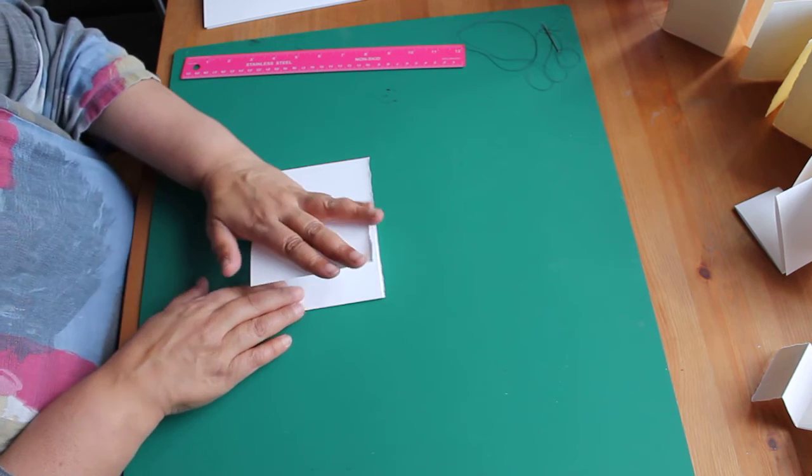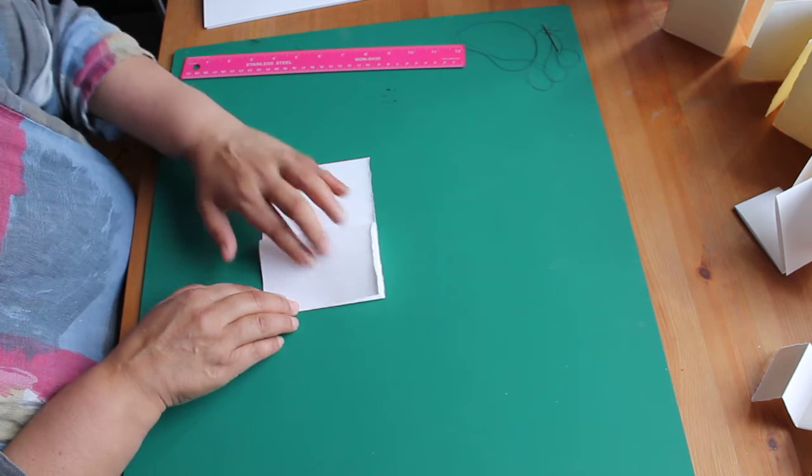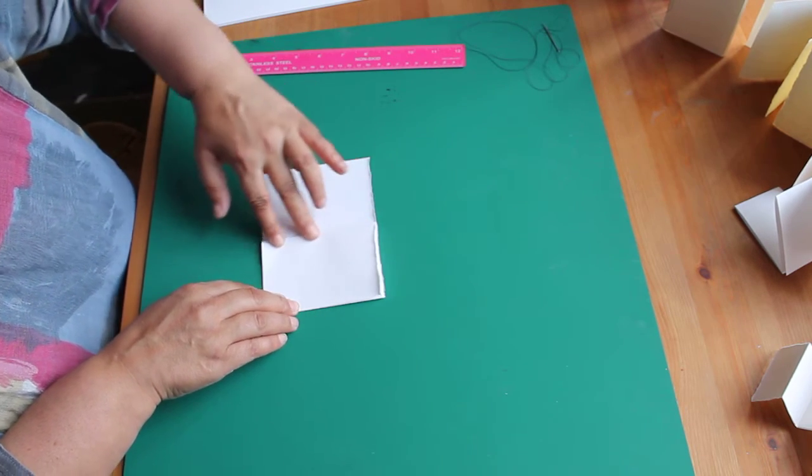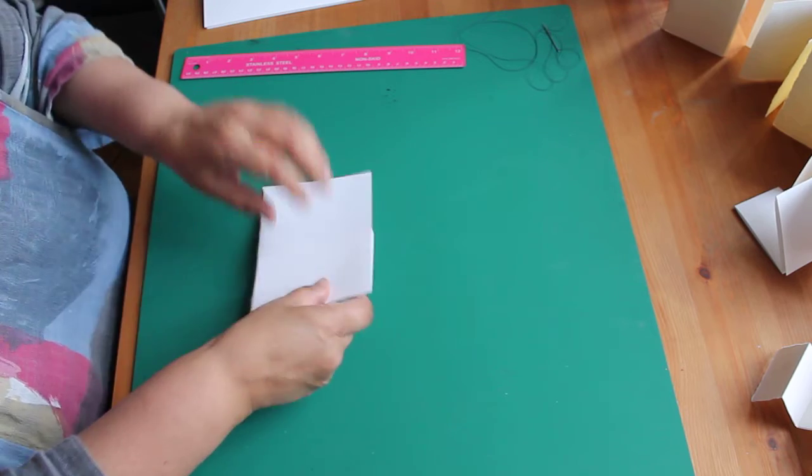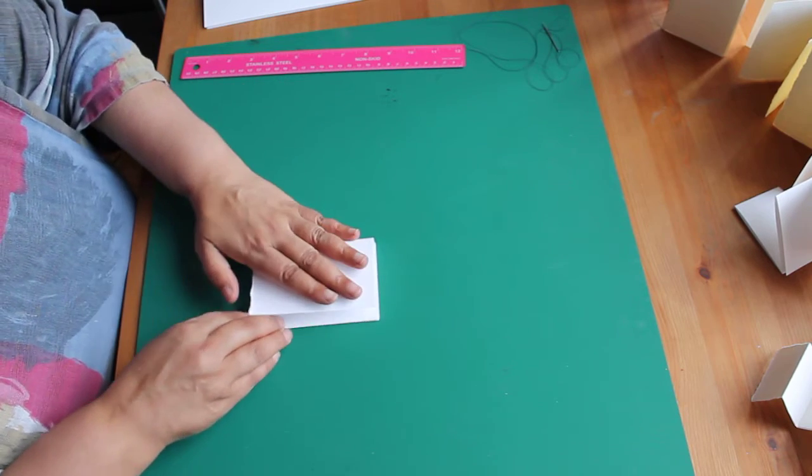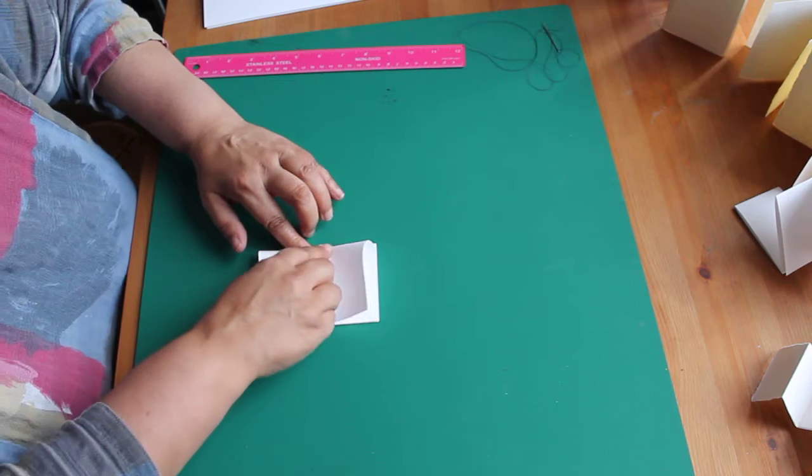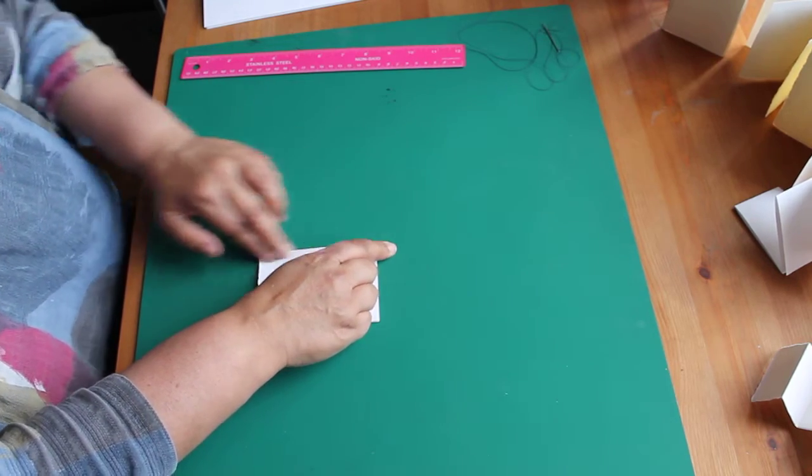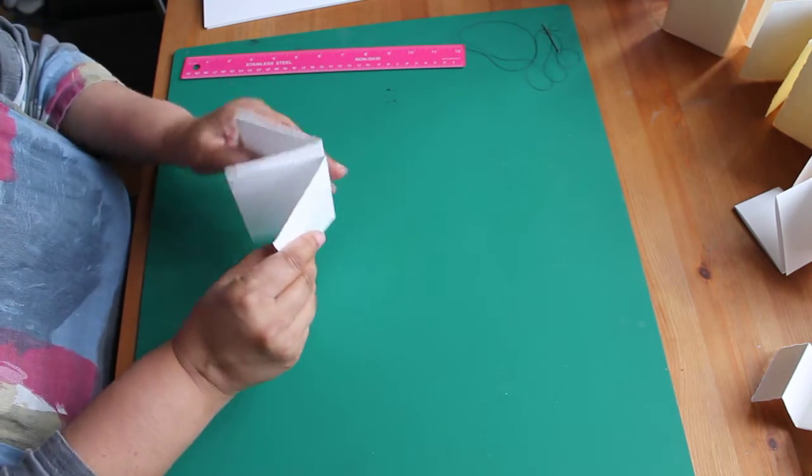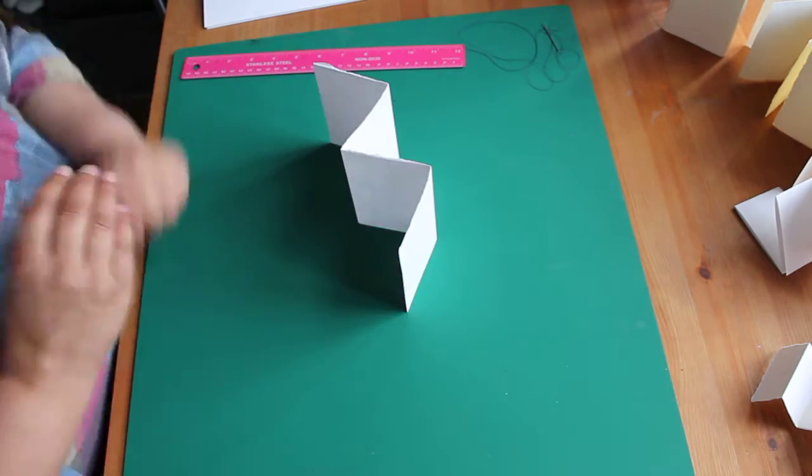Then fold that back. Turn it over and fold this back. And there you have a simple concertina book structure.